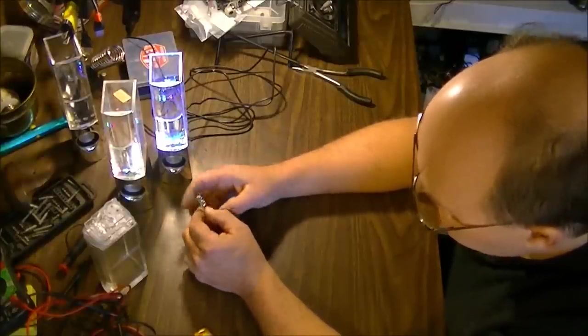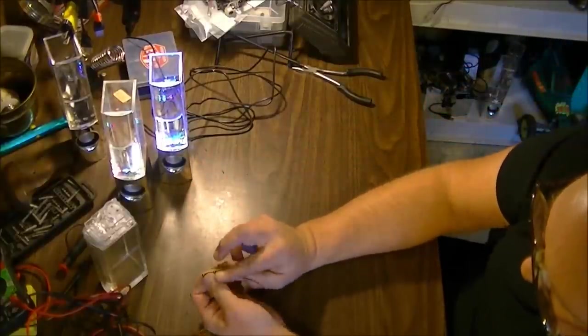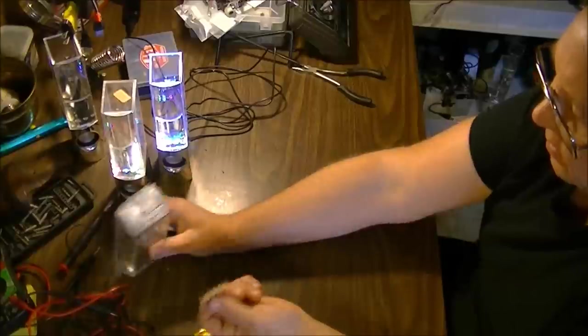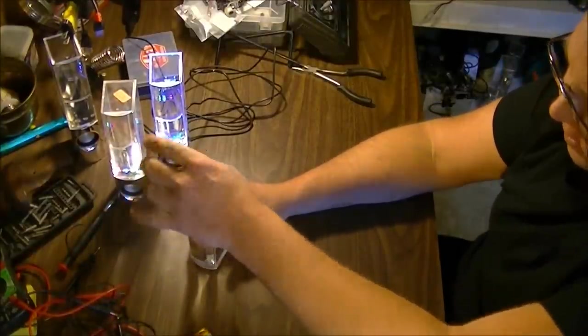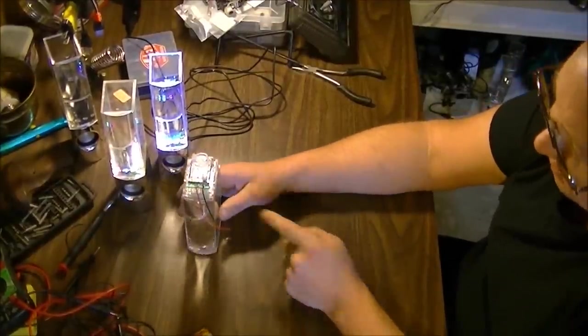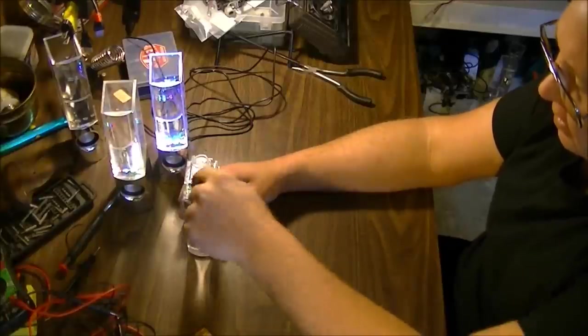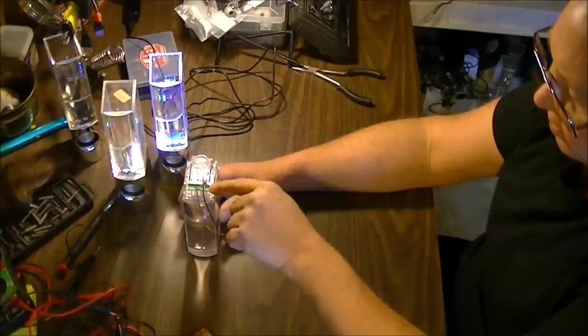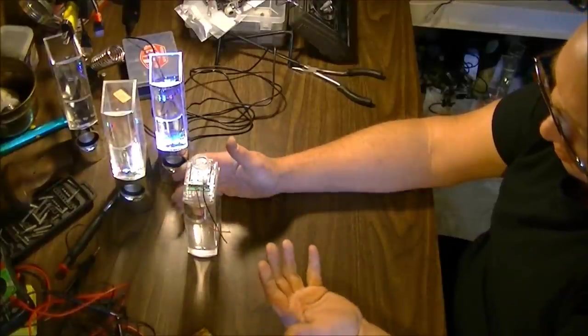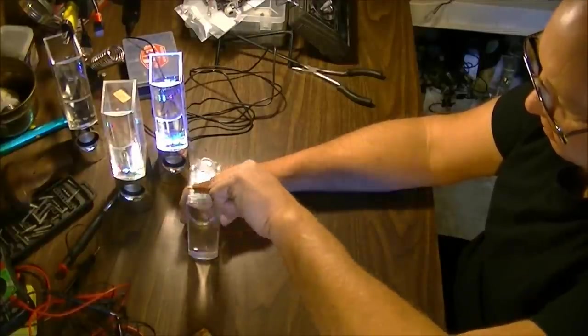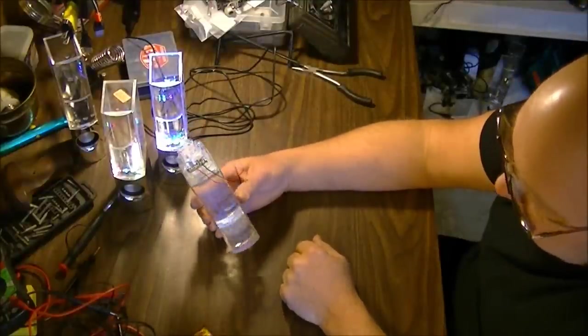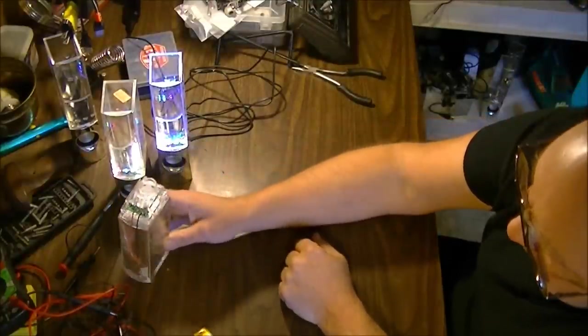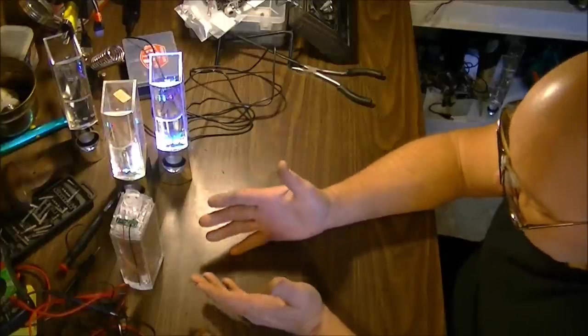Once you're done changing the bulbs that are bad or changing all four, squash that back down facing the same way and just run some fresh hot glue on either end piece, or if you really want to keep it in there, you can run it right across. That'll stay solid and it ain't going to come out again.